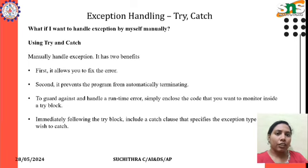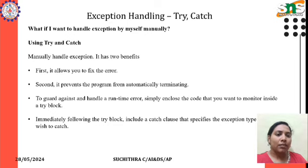What if you want to handle exceptions yourself manually using try and catch? Manually handling exceptions has two benefits: first, it allows you to fix the error; second, it prevents the program from automatically terminating. To guard against and handle a runtime error, simply enclose the code you want to monitor inside a try block, then immediately following the try block include a catch clause that specifies the exception type that you wish to catch.